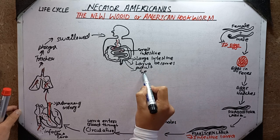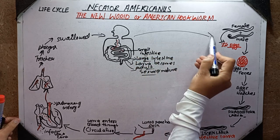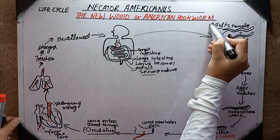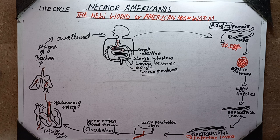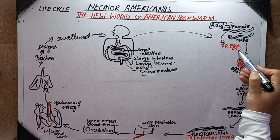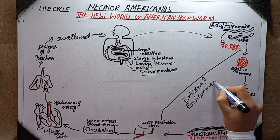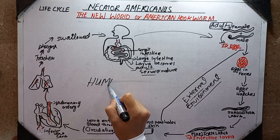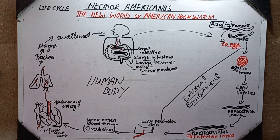In the large intestine the larvae develop into adults and become sexually mature. Male and female hookworms mate with each other and produce a large number of eggs, which again pass out from the human body through the feces. These eggs are then ready to infect another host. The filariform larva will enter the human body and complete the whole life cycle, which occurs only in one host — humans.